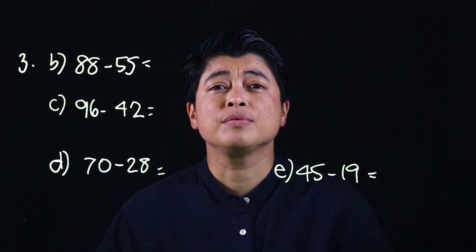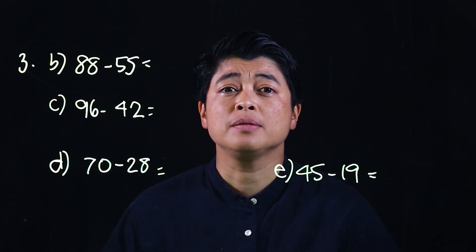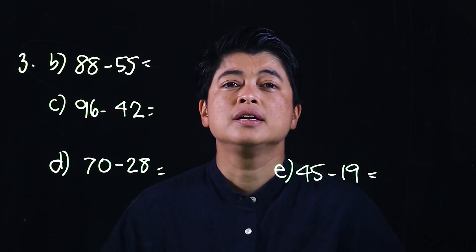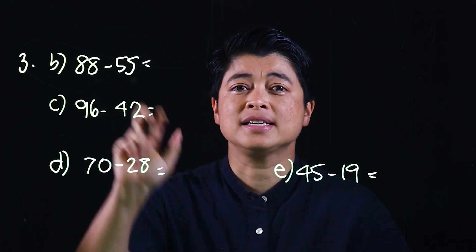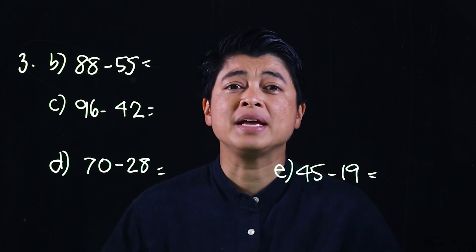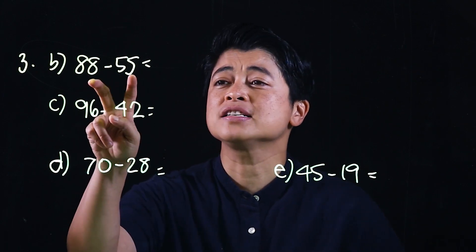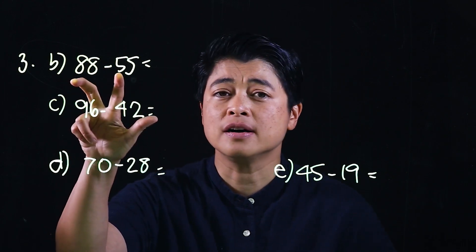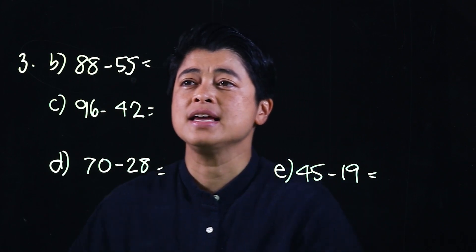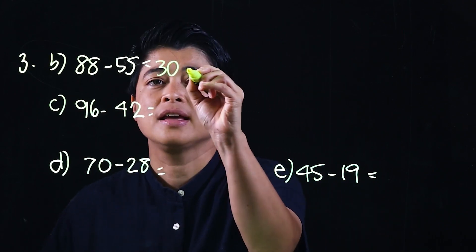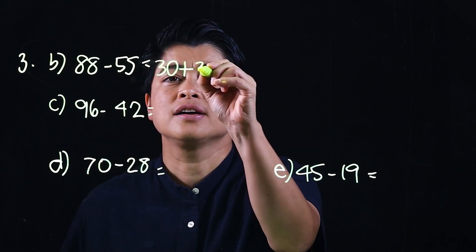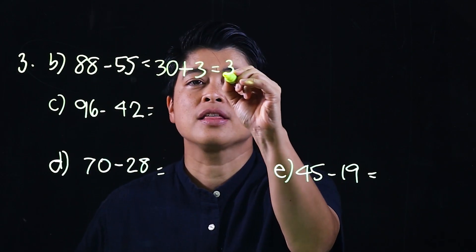The thought process for mental subtraction is very similar to mental addition. We look at the ones place and see if regrouping is needed. If there's no regrouping needed, we add the difference of the ones to the difference of the tens. For example, 80 minus 50 is 30, and 8 minus 5 is 3, giving us 33.